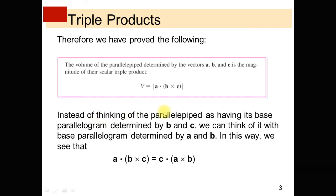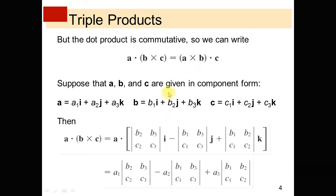Instead of thinking of the parallelepiped with base parallelogram determined by A and C, we can think of it with base parallelogram determined by vectors A and B. In this way, we see that A dot (B cross C) equals C dot (A cross B). The dot product is commutative and we can write A dot (B cross C) equals (A cross B) dot C.